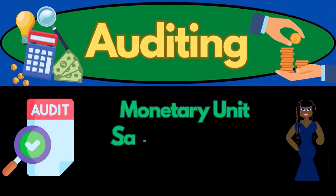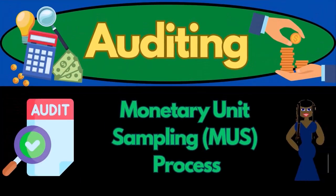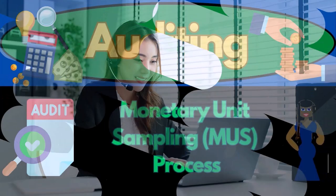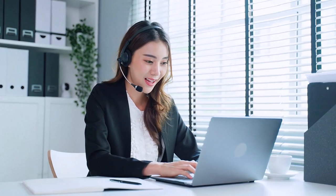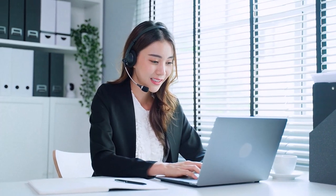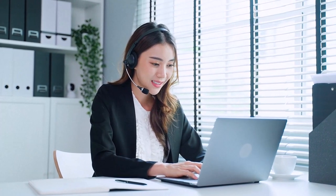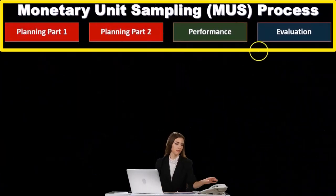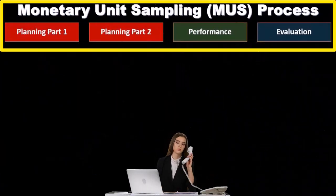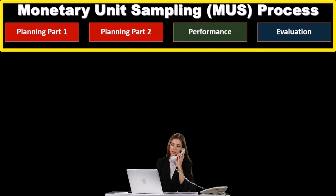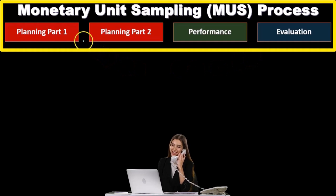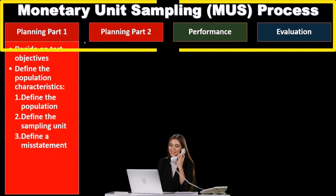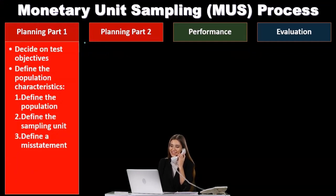In this presentation, we will discuss the monetary unit sampling, or MUS, process and the steps we will go through to apply it. We're going to have the planning part, the performance, and the evaluation. This is where we're going to break the steps up into these categories. The planning is going to have two components because we'll have a long description of what is in the planning.